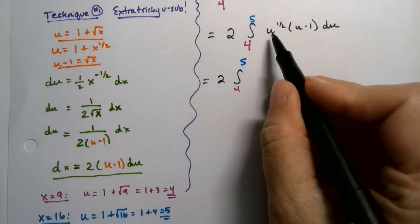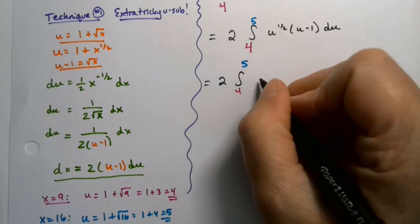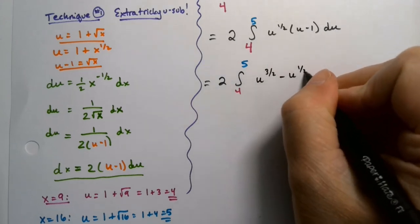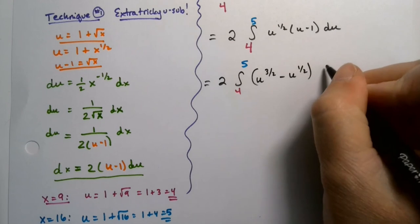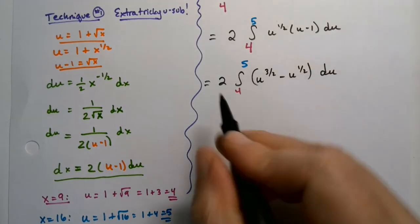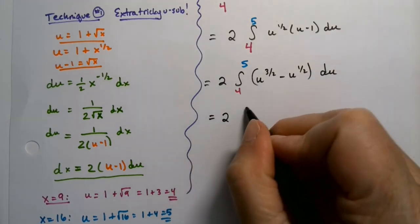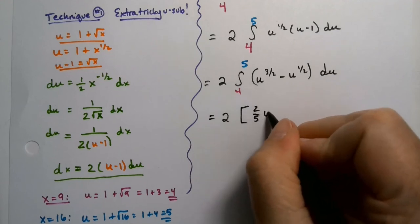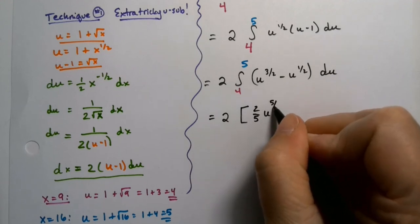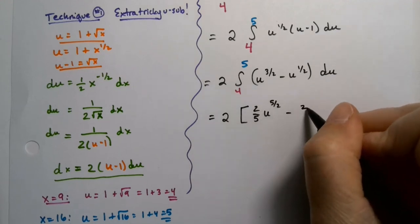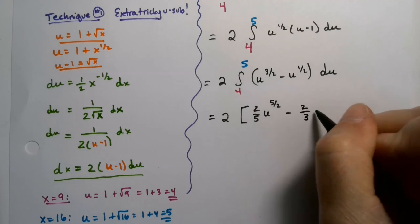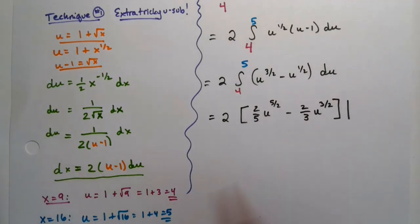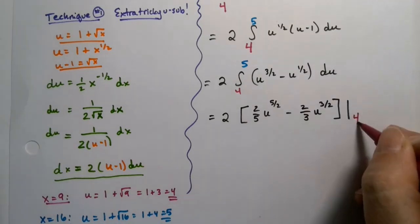This gives us 2 times the integral from 4 to 5. Distributing using algebra, we get u to the 3/2 minus u to the 1/2 du, which I know how to integrate. That integrates to 2 times [2/5 u to the 5/2 minus 2/3 u to the 3/2] evaluated from 4 to 5.